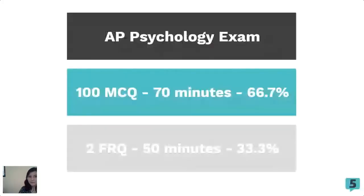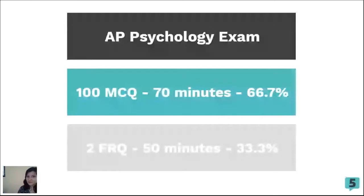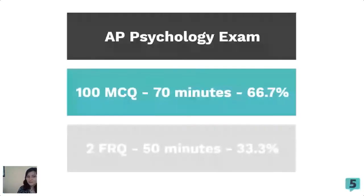To give you a breakdown of what the psychology exam is like: there will be 100 multiple choice questions, which will take 70 minutes and be worth two-thirds of your AP score. After that, there will be two free response questions, which will take 50 minutes and be 33% of your AP score.